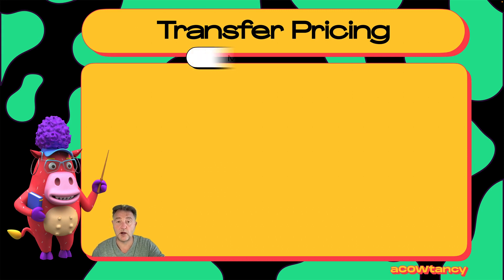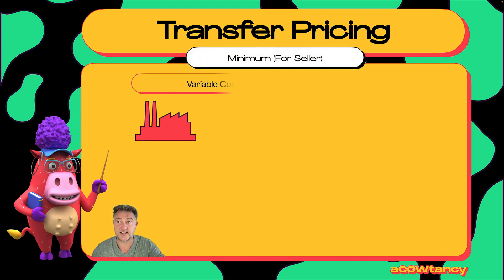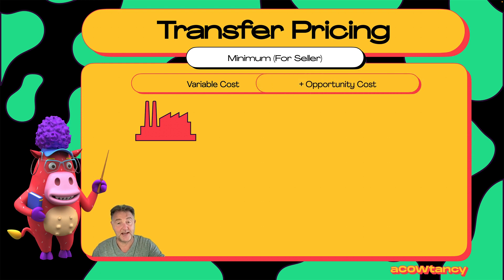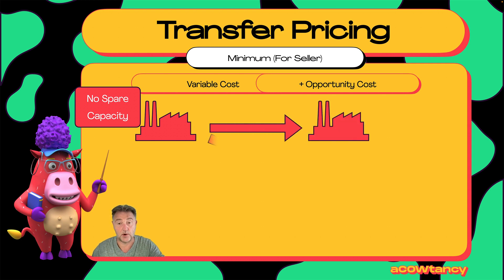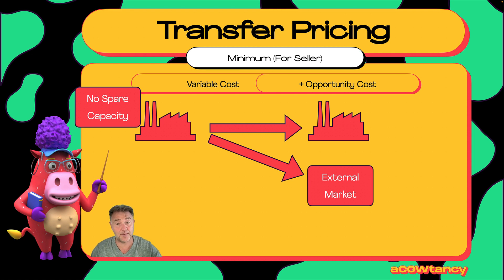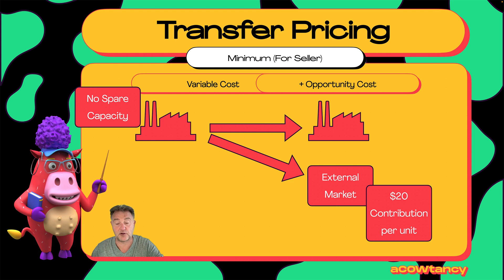We know that the minimum price for the seller, the selling division, is the variable cost and the opportunity cost. In this case, this selling division has no spare capacity and it's been forced to sell to a buying division. What it would rather do is keep on selling to the external market, and we have no spare capacity. In the external market, we make an extra 20 contribution per unit.